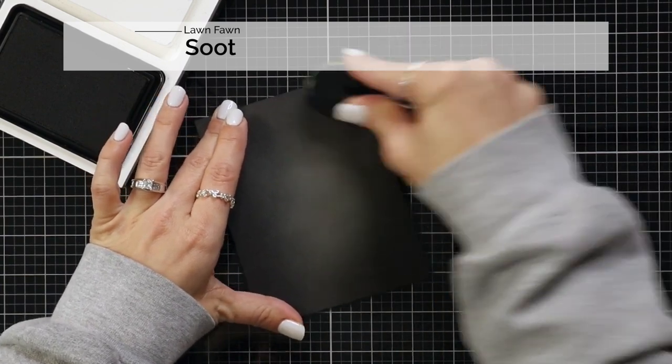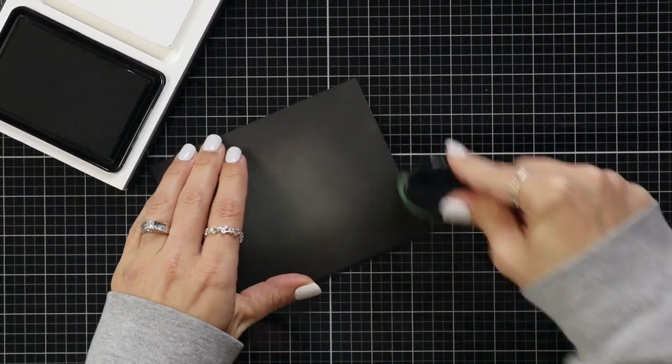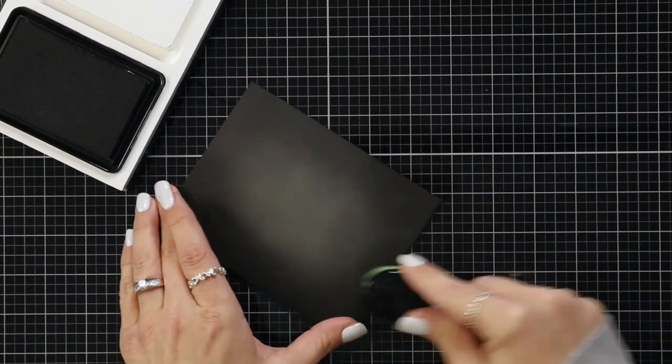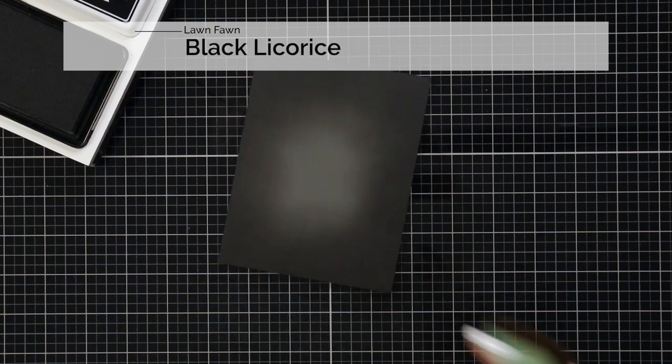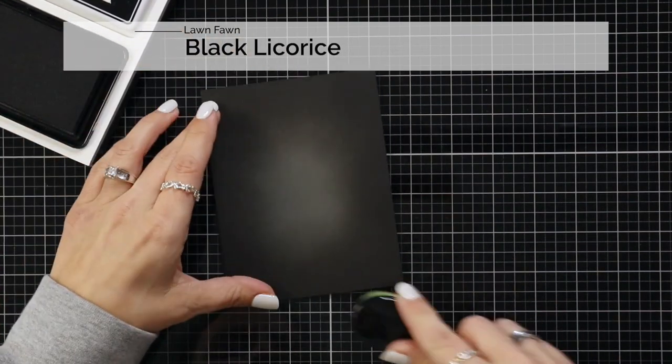Now I'm going to bring in soot and I wanted to have it kind of a little bit darker. I'm not going in as far as I did that previous color. The soot wasn't quite as dark for me as I wanted so I'm bringing in black licorice.